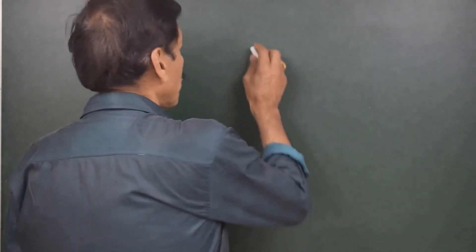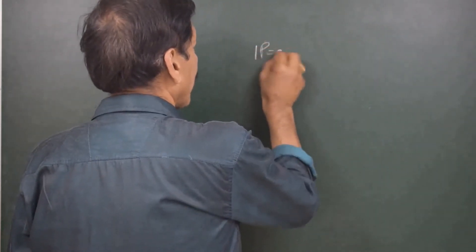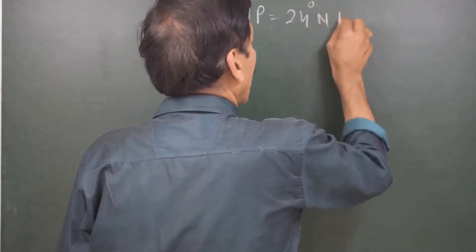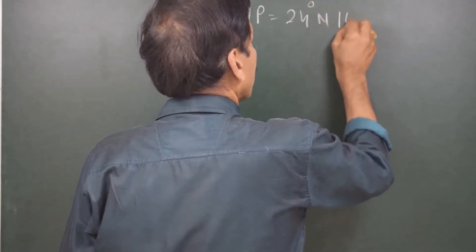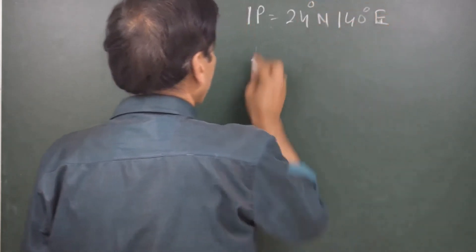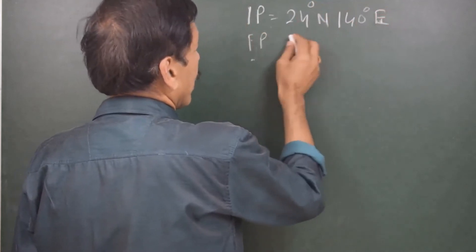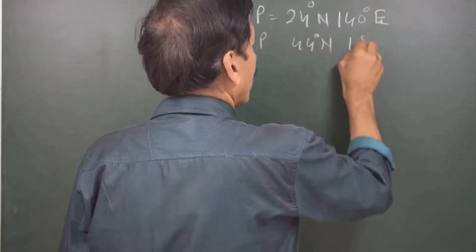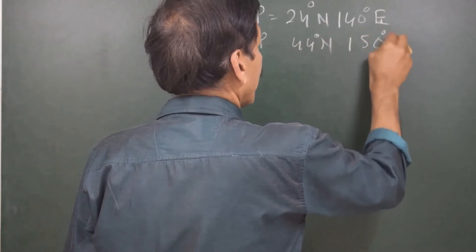Let us take a simple case that you are going from one place to another. Say initial position 24 degrees North, 140 degrees East, and then final position 44 degrees North, 150 degrees West.